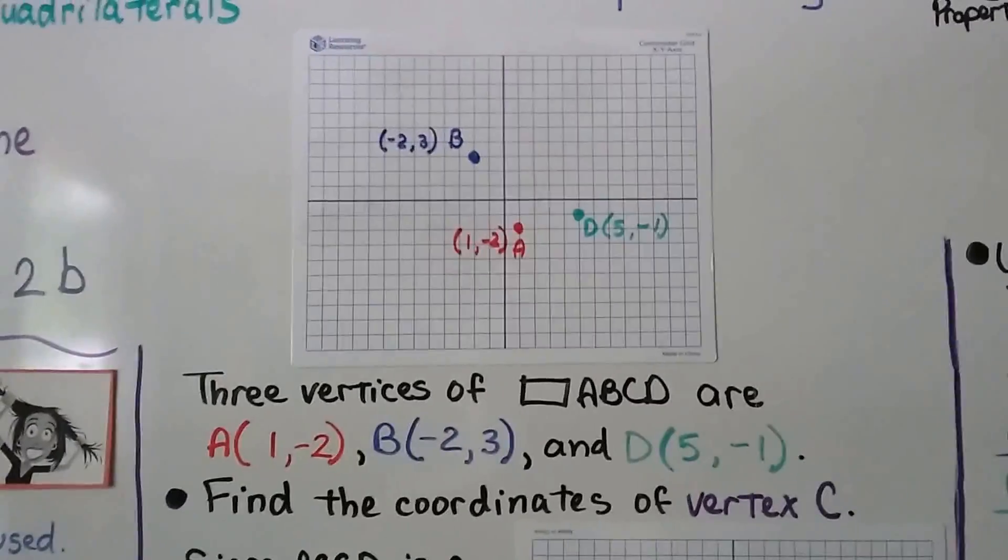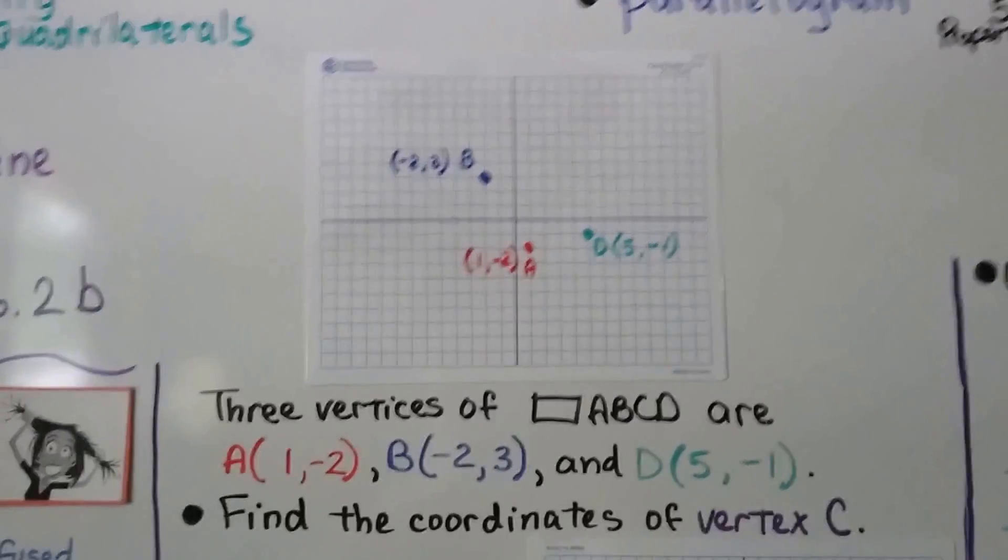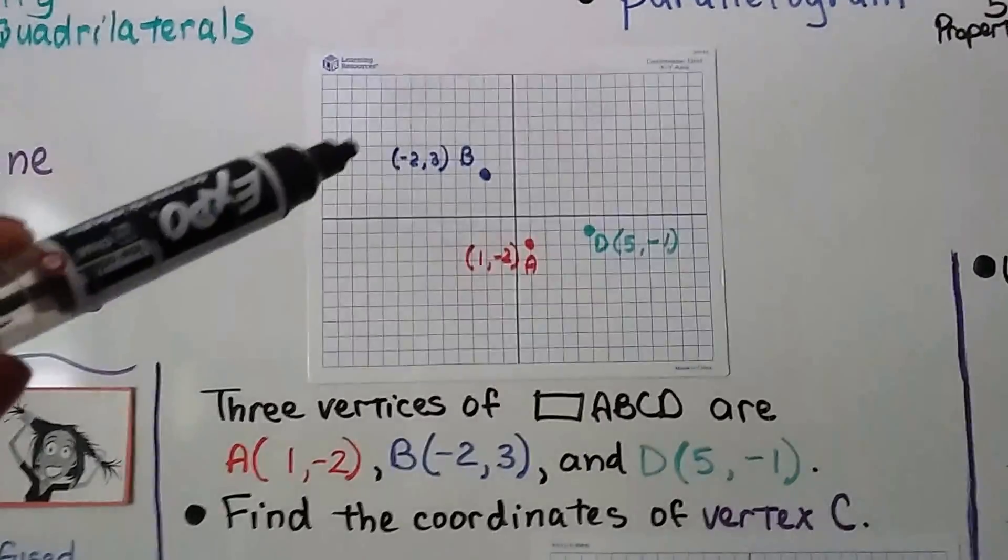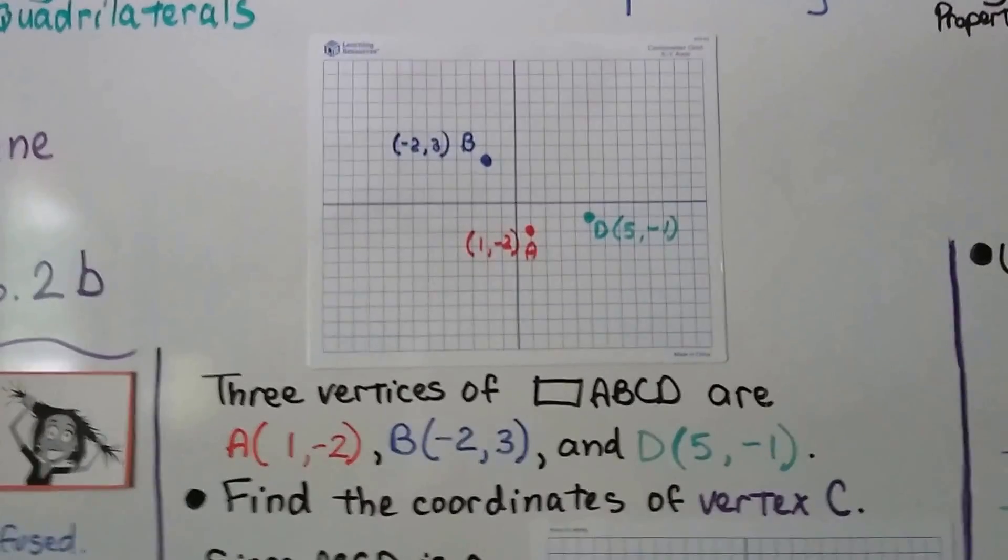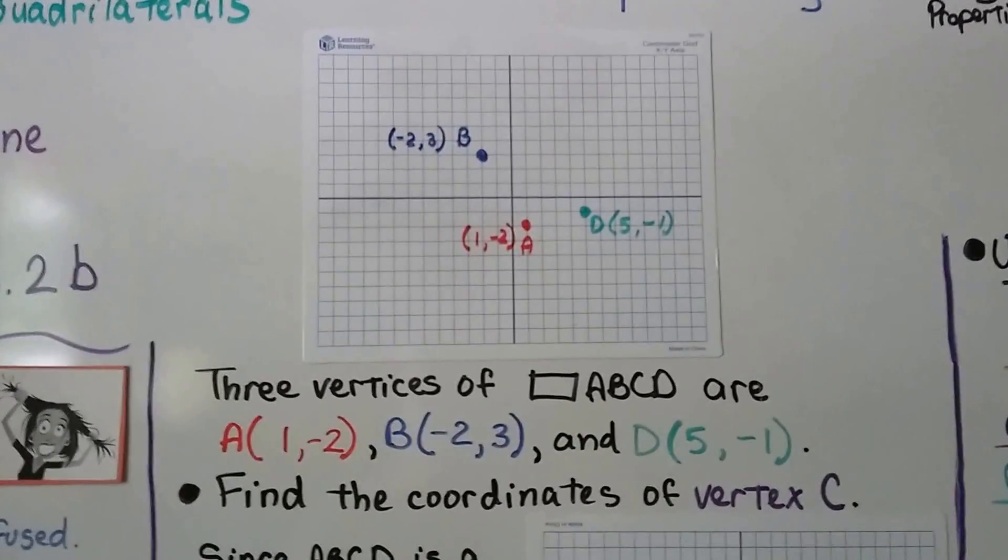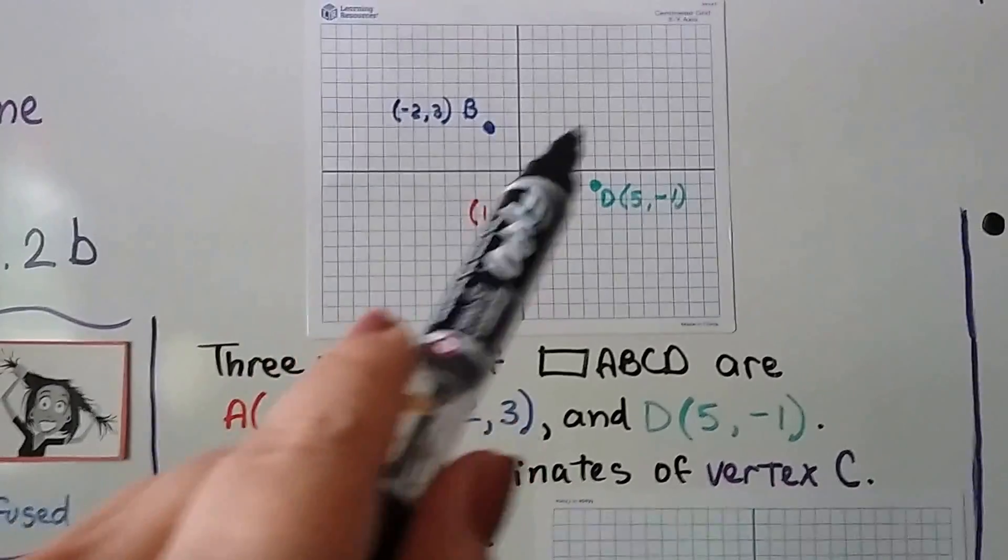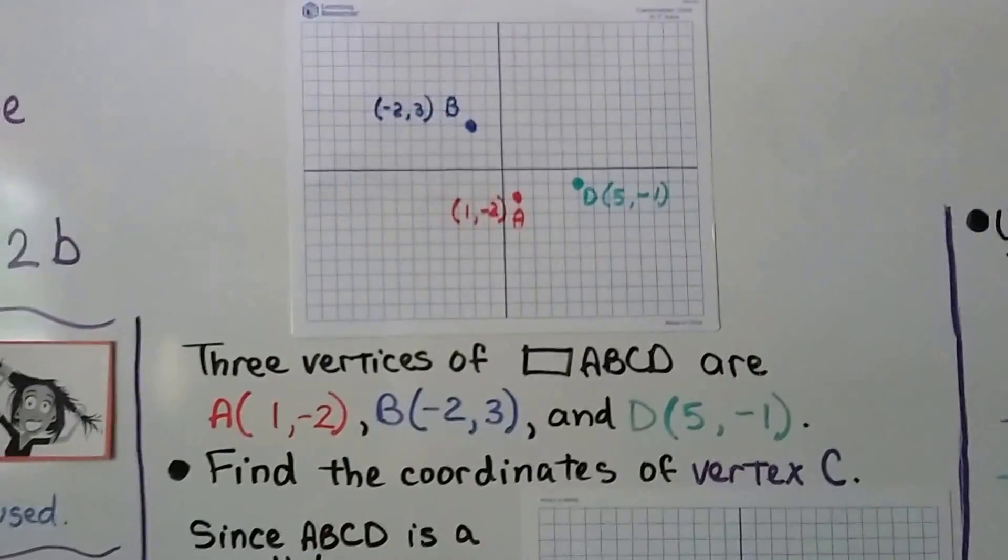We have three vertices of parallelogram ABCD. Our A is at negative 2, negative 1, B is at negative 5, 4, and D is at 5, negative 1. We need to find the coordinates of vertex C. So it's missing here, isn't it? And we know it's a parallelogram, so it should be kind of box-shaped, right?